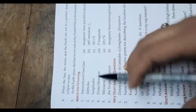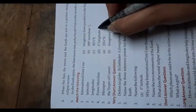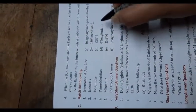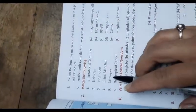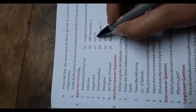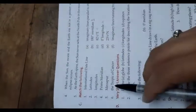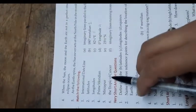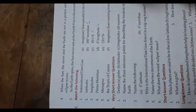Prime Meridian — it is the 0-degree longitude. Standard meridian of India — it is 82 and a half degrees East, passing through Mirzapur. The Tropic of Cancer — it is 23 and a half degrees North.